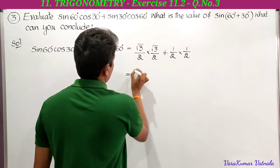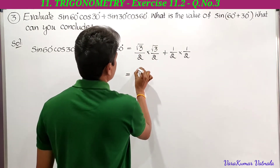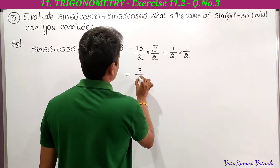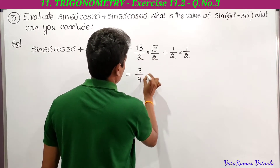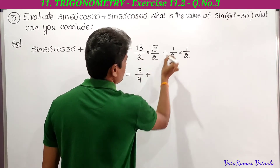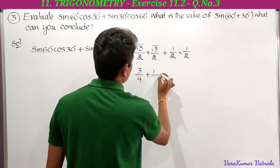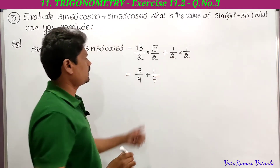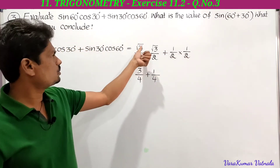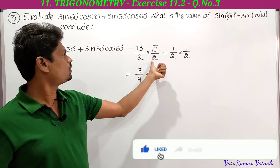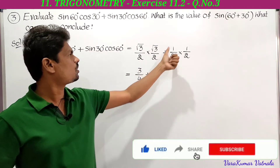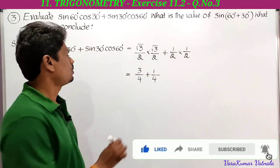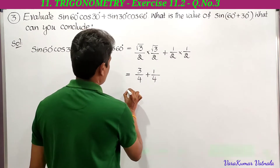Now, root 3 into root 3 is 3, and 2 into 2 is 4, so the first term is 3 by 4. For the second term, 1 into 1 is 1, and 2 into 2 is 4, so that is 1 by 4. The denominators are the same, so we can add the numerators.